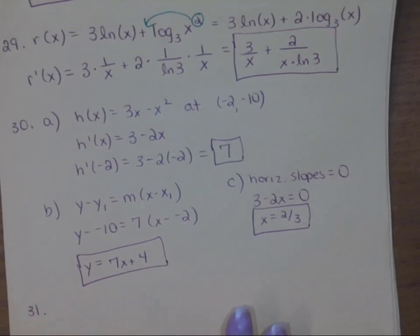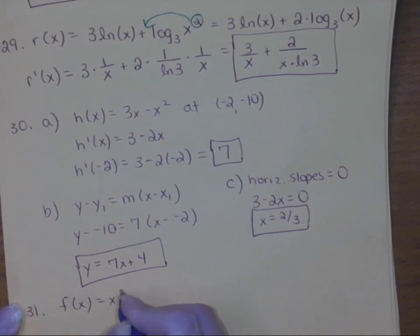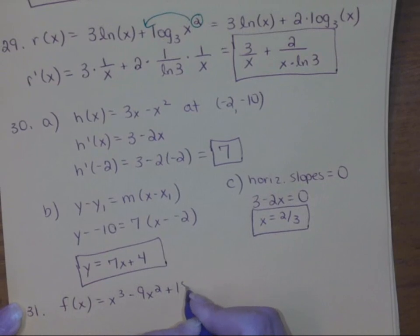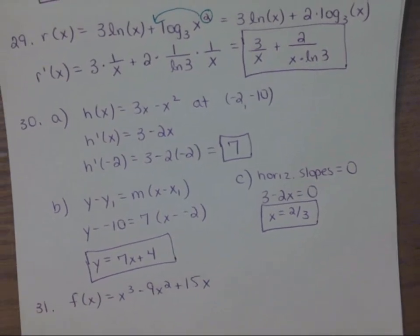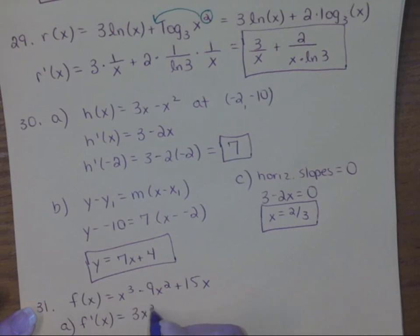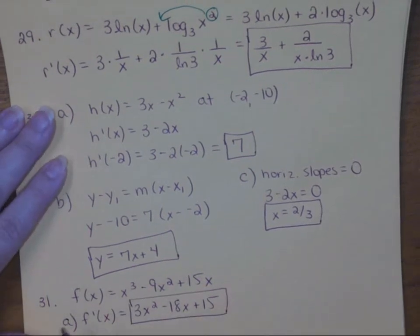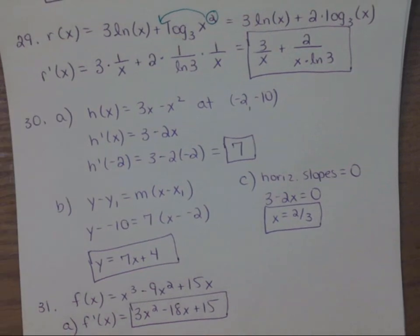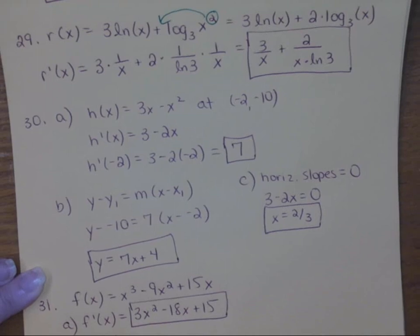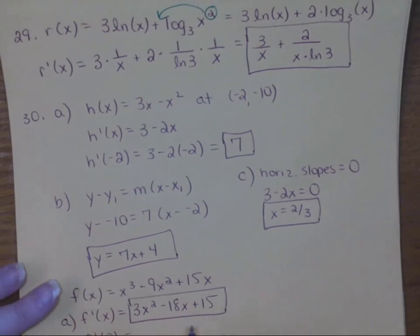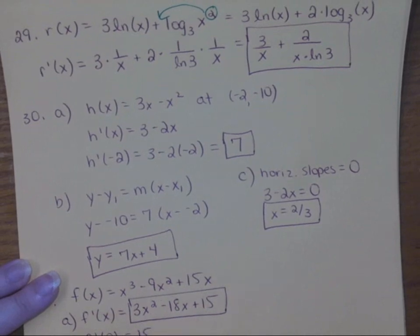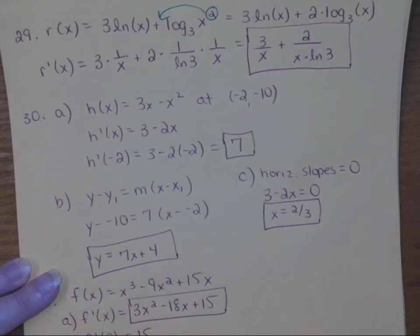Number 31: we have a position function x cubed minus 9x squared plus 15x. The instantaneous velocity function is the derivative, so part a just asks you to find the derivative — that's 3x squared minus 18x plus 15. For part b, find the velocity when x equals 0 and when x equals 3, meaning plug those values into the derivative formula. Plugging in 0 gives 15 (those terms go away), and plugging in 3 gives negative 12.